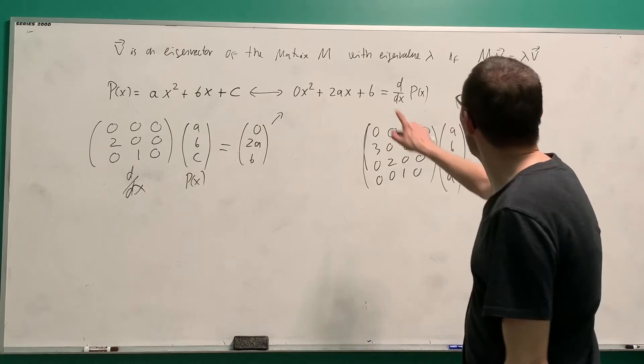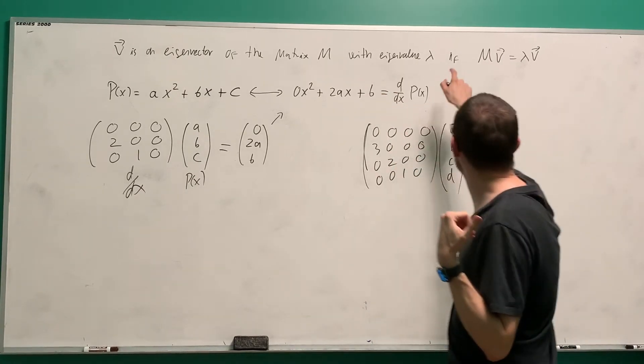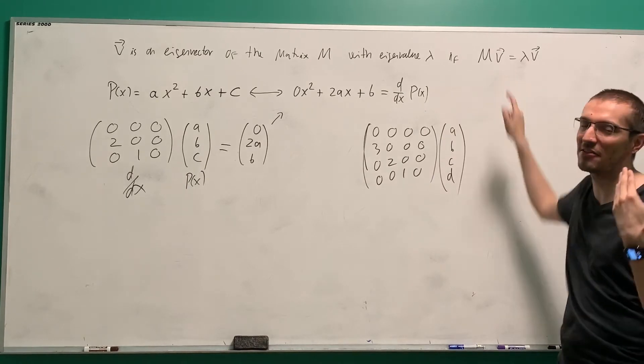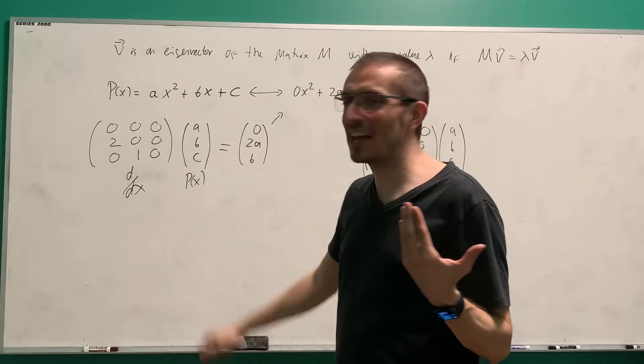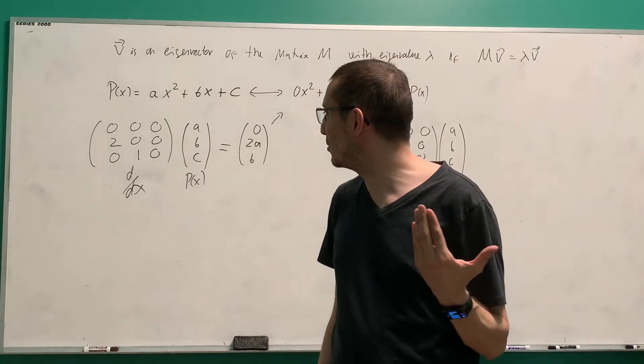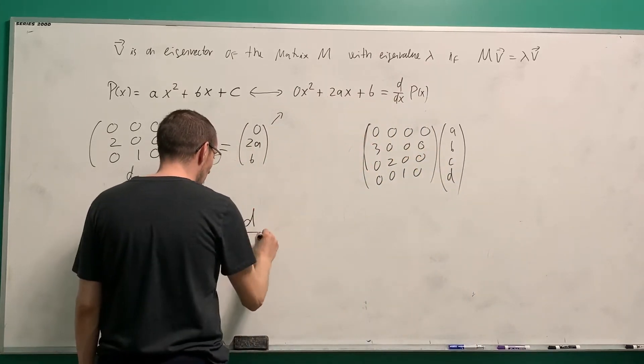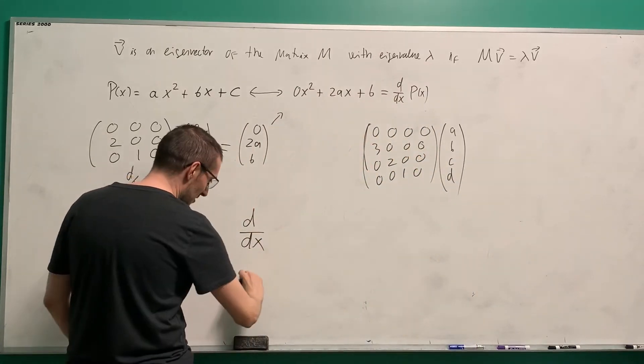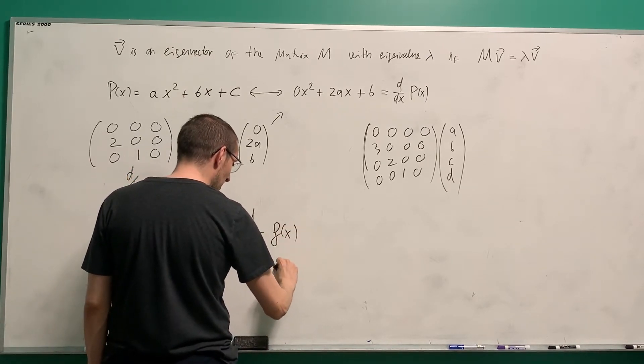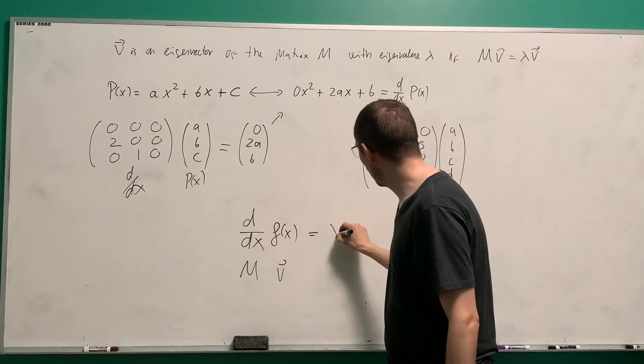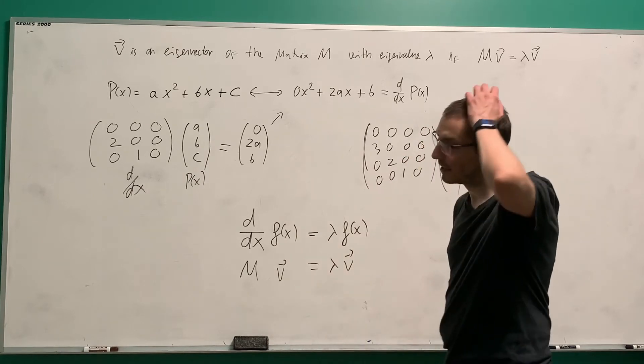It gets even cooler. What are... So, if a matrix, if operating with a matrix becomes simpler when you express everything in the basis of eigenvectors of the matrix, what are the eigenvectors and the eigenvalues of the derivative? So d/dx is the matrix, m if you want, then f(x) is the vector, v. I want this to be lambda times the vector. That's the analogous.